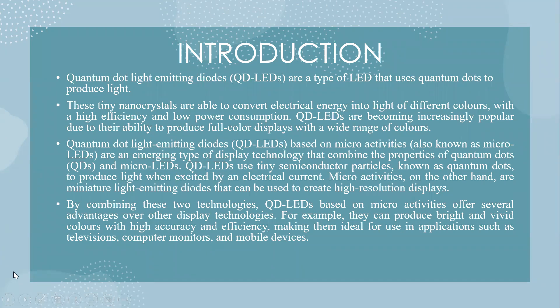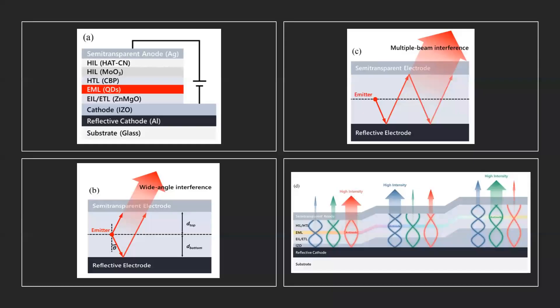By combining these two technologies, QD LEDs based on micro activities offer several advantages over other display technologies. For example, they can produce bright and vivid colors with high accuracy and efficiency. This is the device architecture of QD LEDs showing light emitting in wide angle interference and multiple beam interference, along with the colors of quantum dot light emitting diodes.